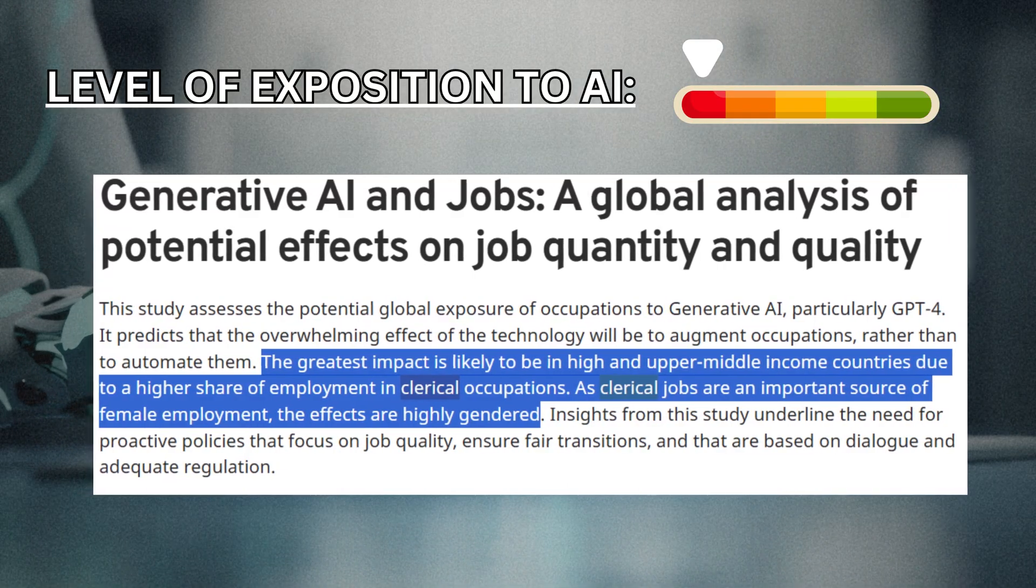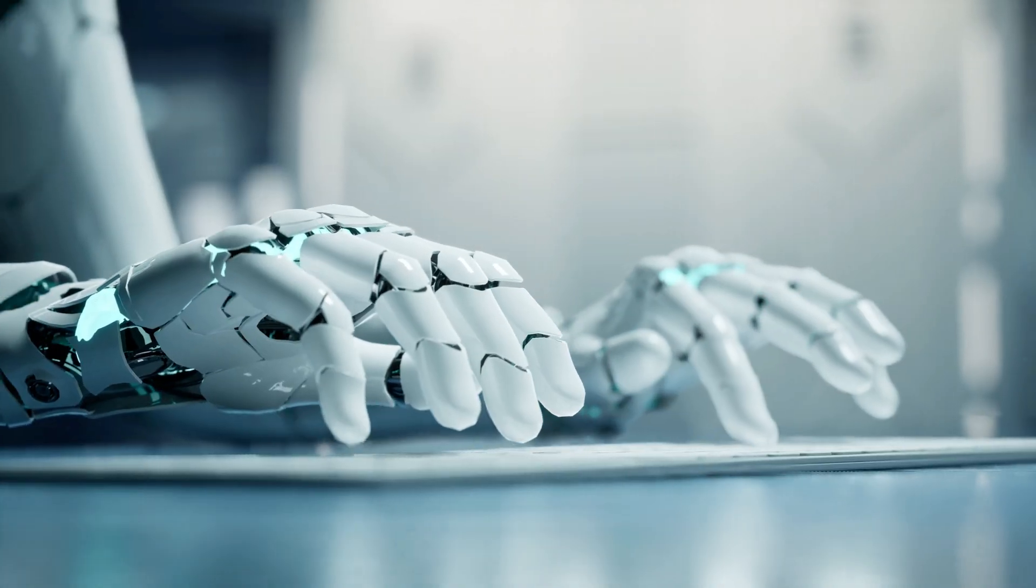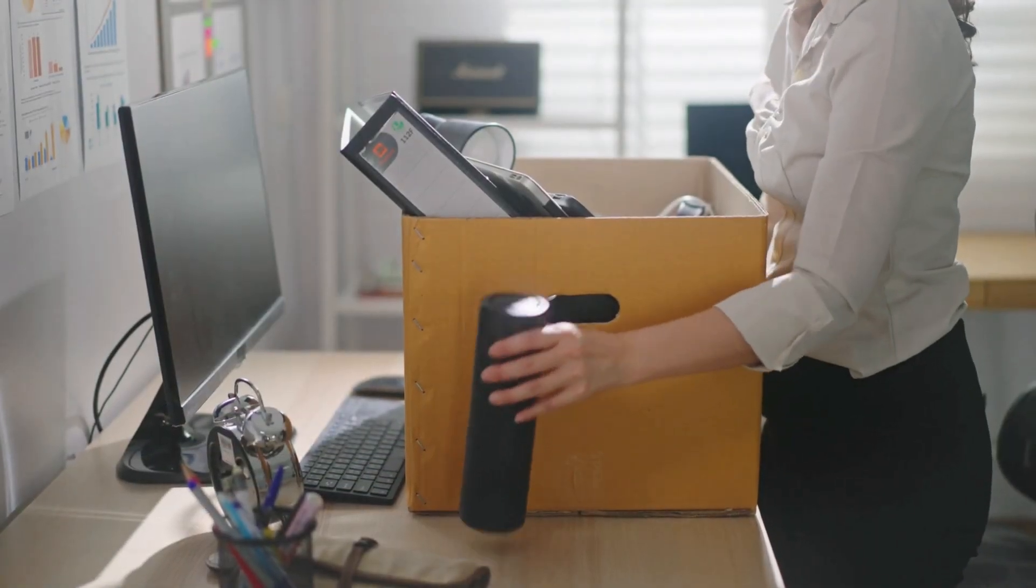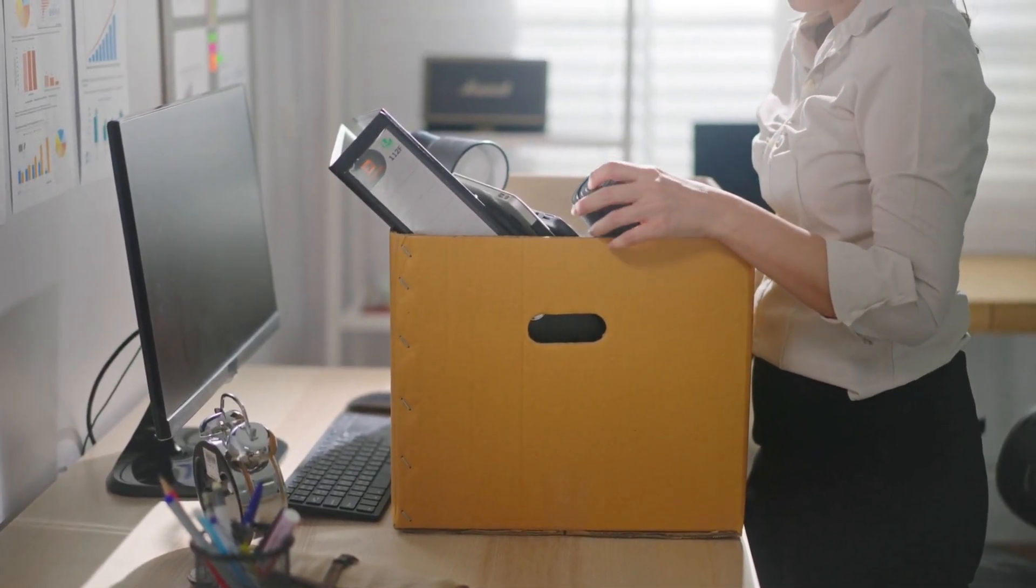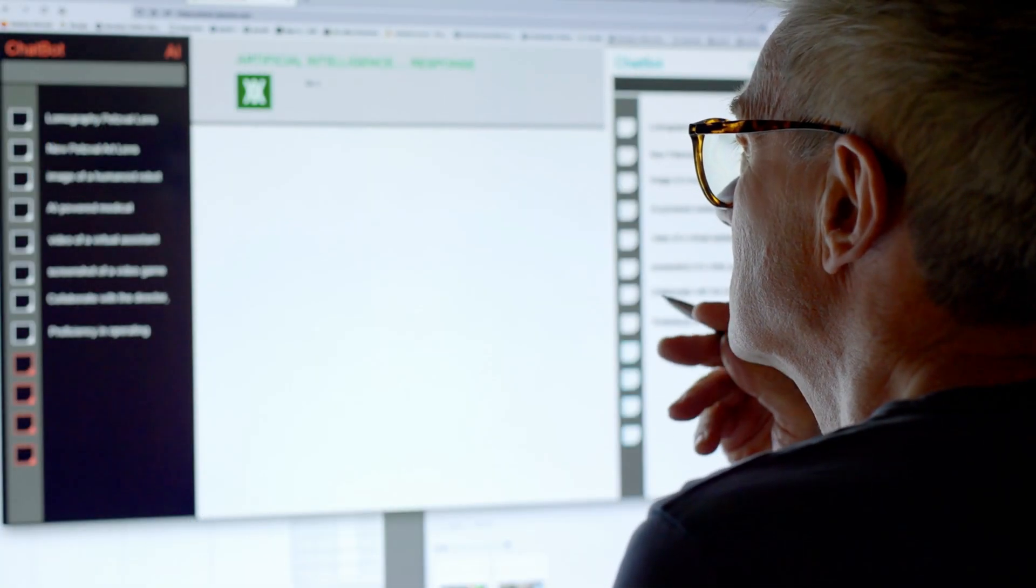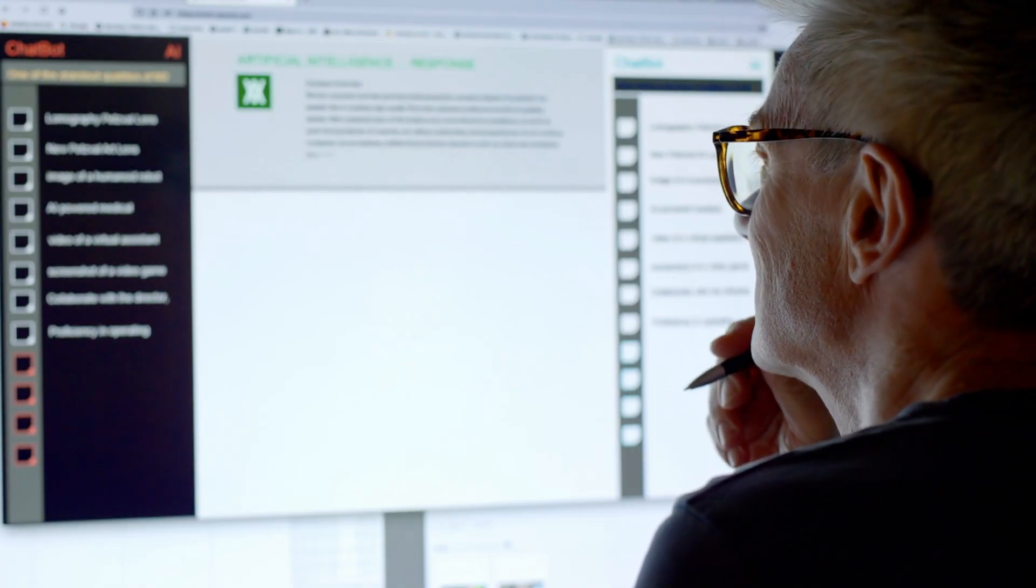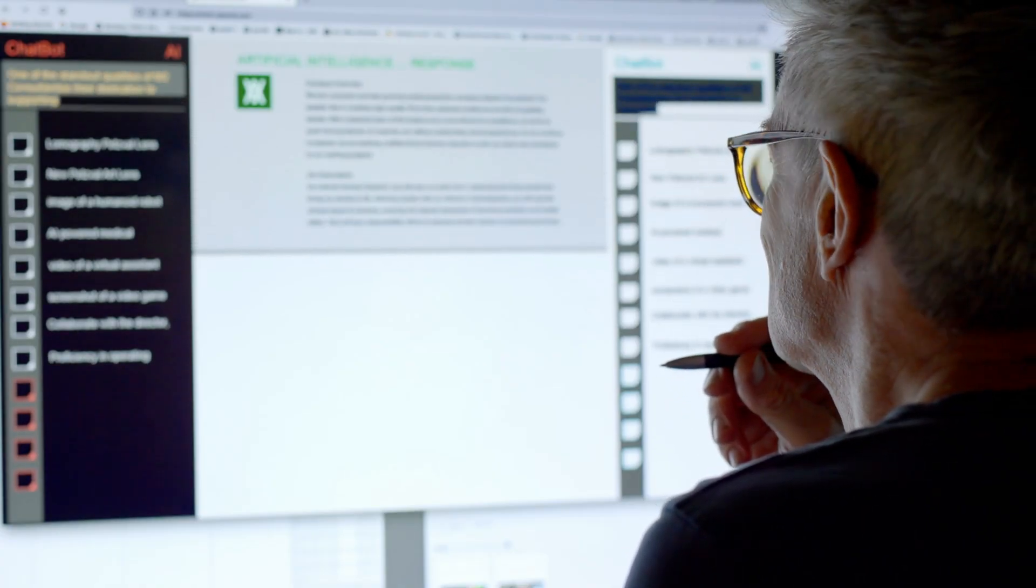Adoption is gradual. Budgets, tools, and training take time, but the direction is clear. You'll likely see fewer typing-all-day roles and more assistant roles, where one person checks many AI drafts, corrects numbers, handles exceptions, and deals with people who need help the bot can't give.